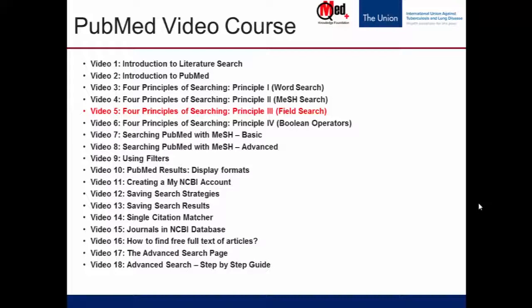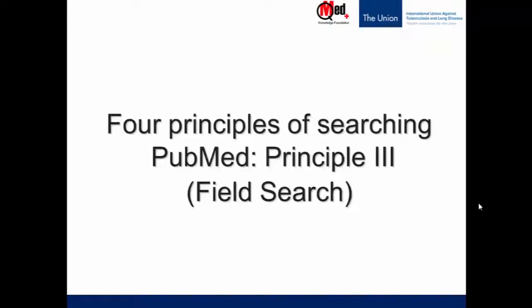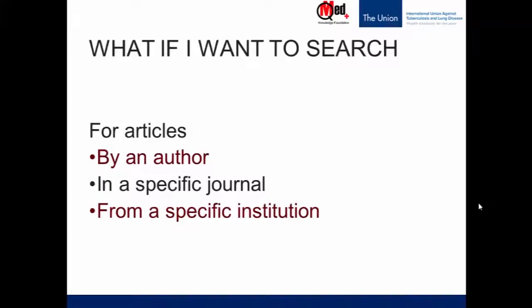Welcome to the fifth video, which covers the third principle of the four principles of searching. This principle is on field search. Let's understand what we mean by field searching. I may want to search for articles by an author, or articles published in a specific journal to get an idea of what kind of articles that journal covers, or I may want to know about the publications from a specific institution.